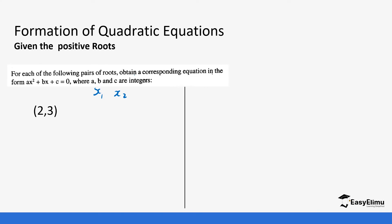So this means x equals 2 and x equals 3. We need to go back and form the factors, so this is x minus 2 equals 0 and x minus 3 equals 0.